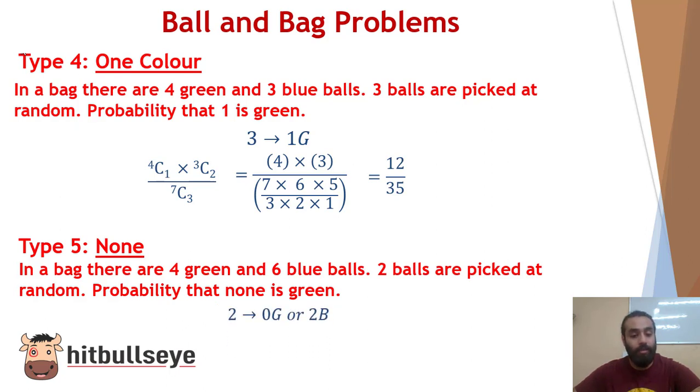So let's see, we can directly write the answer as 6C2 because green we have not picked here. So we will see the probability of blue balls. So 6C2 upon the total number of balls, that is 10C2. This will give you an answer as 15 upon 45 and your final answer will be 1 by 3.